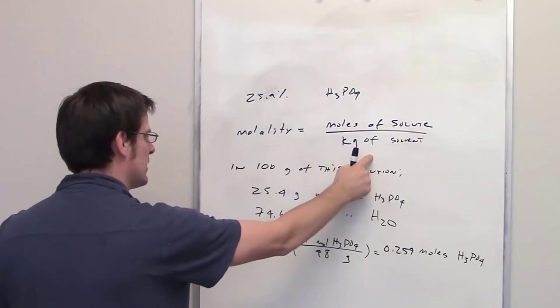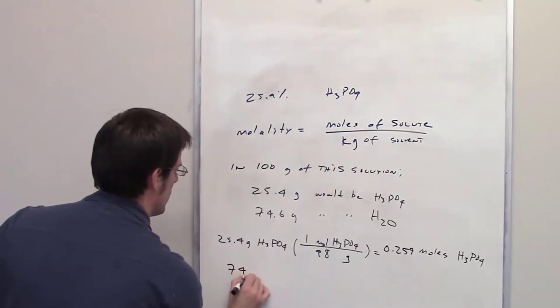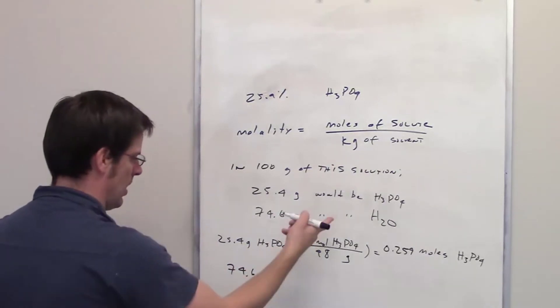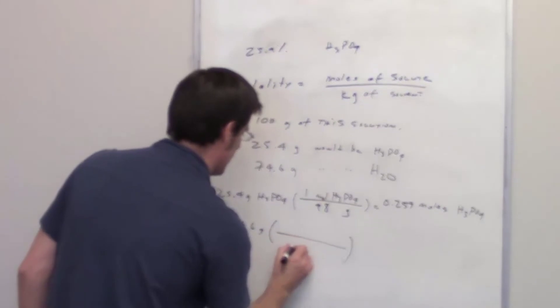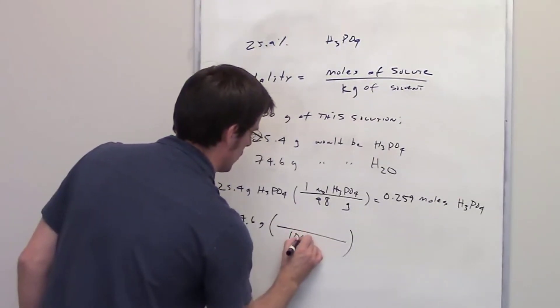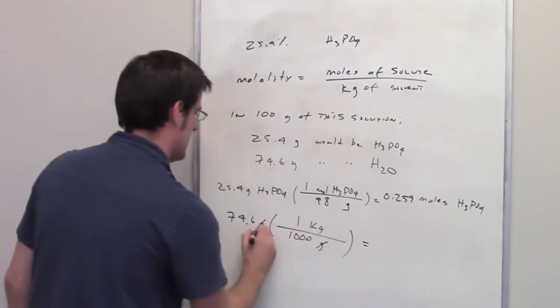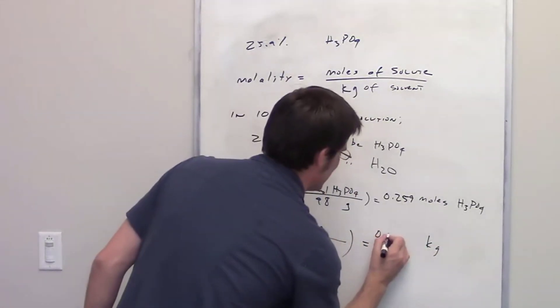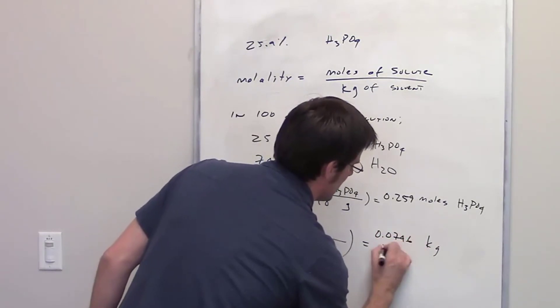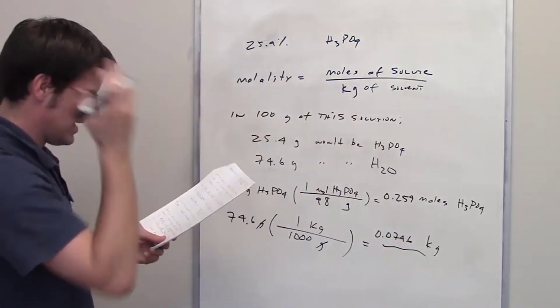Now, molality, I need to determine kilograms of solvent. I've got 74.6 grams of water. How many kilograms is that? Can you figure that out? I bet you can. We've got 1,000 grams in 1 kilogram. So I just plug and chug, and that tells me that this 74.6 grams is 0.0746 kilograms.